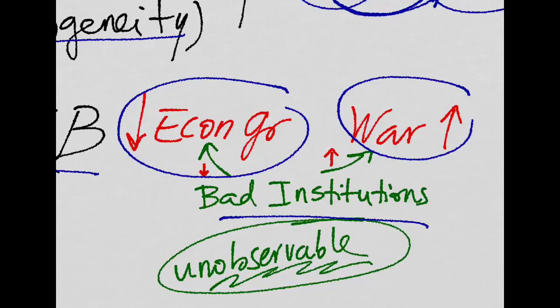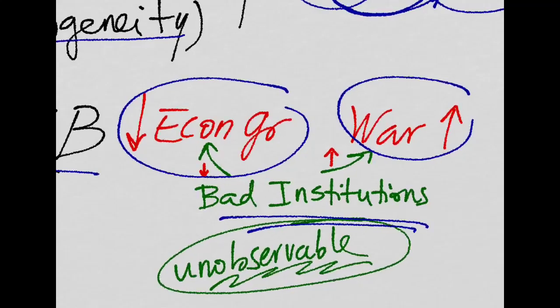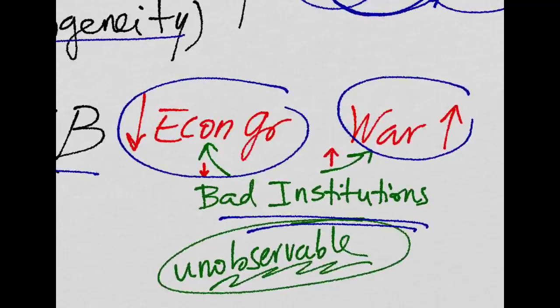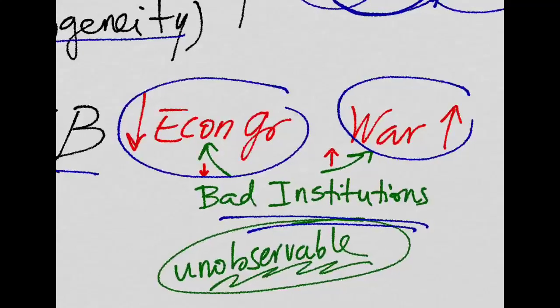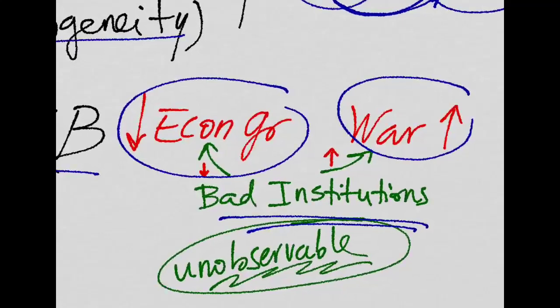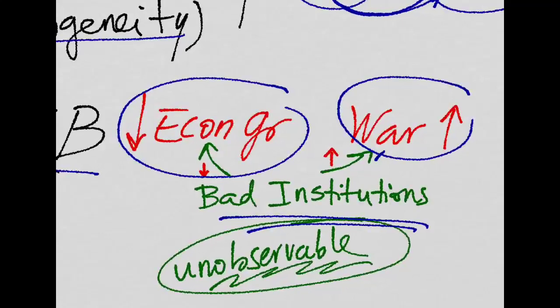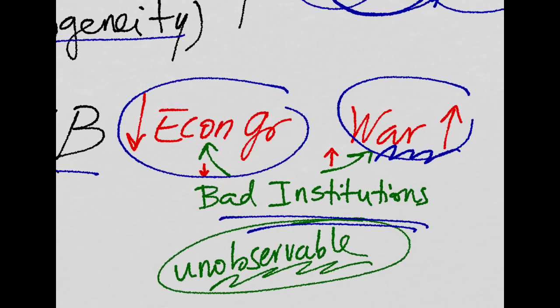And that thing is usually something that we cannot observe. For example, we can think of a country having bad institutions, and those institutions create slow growth, and at the same time, generate instability in the country, which leads to war.